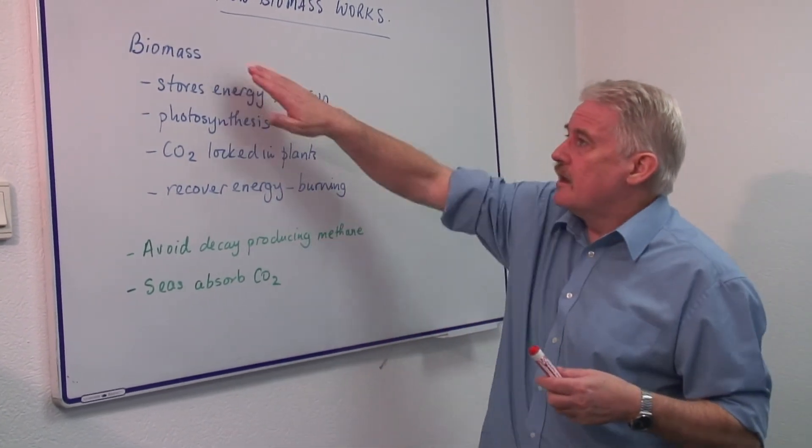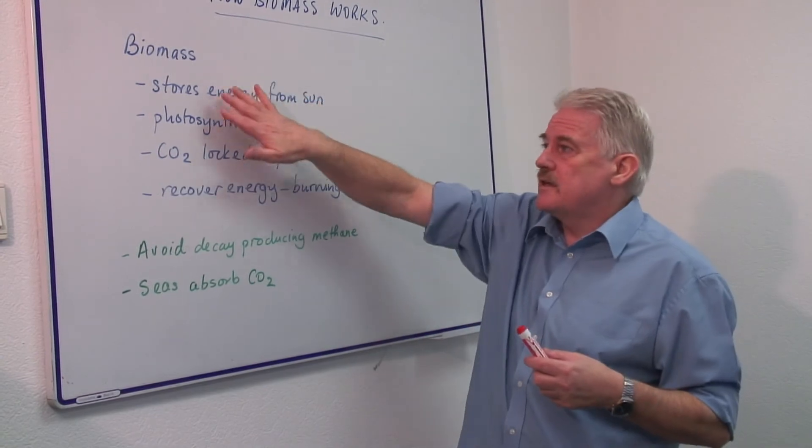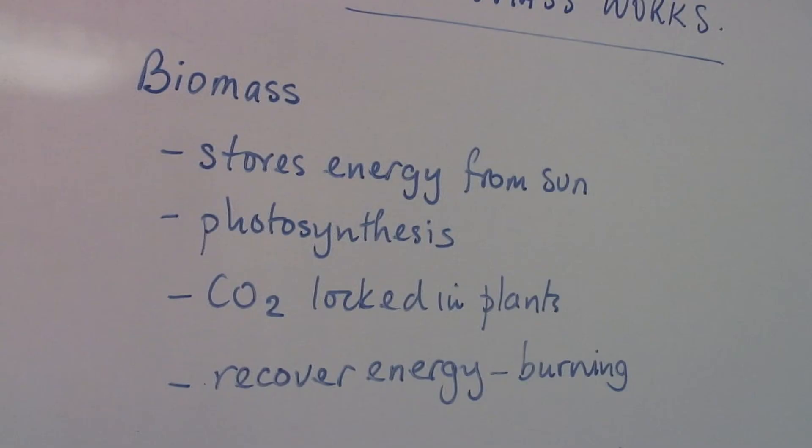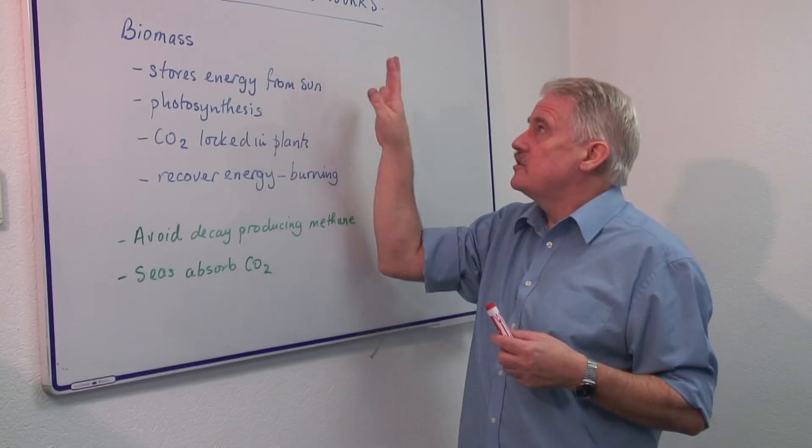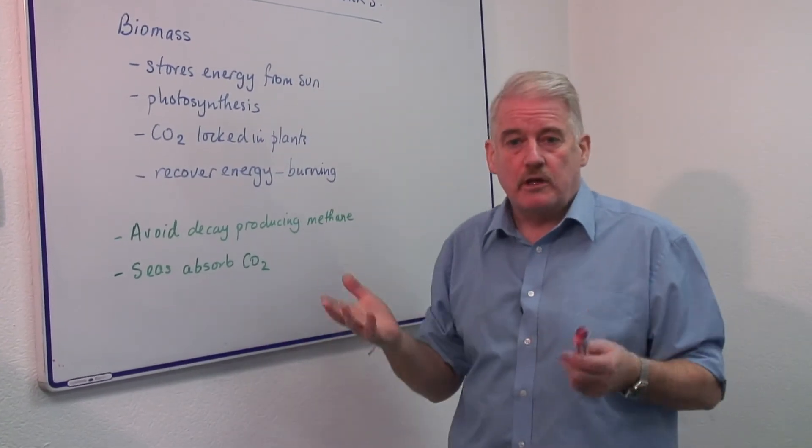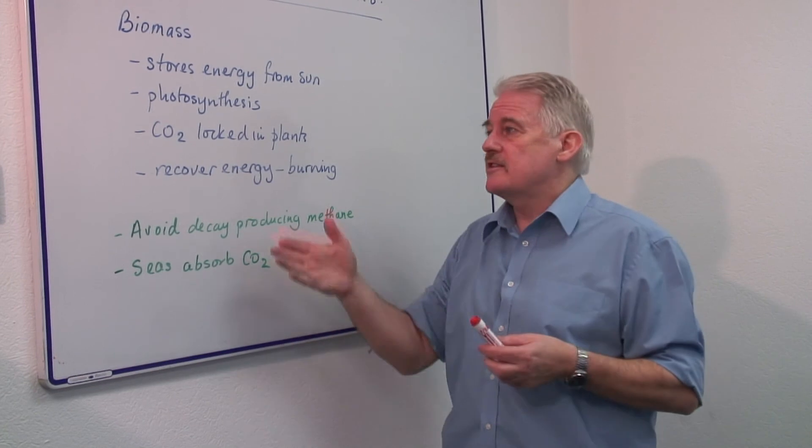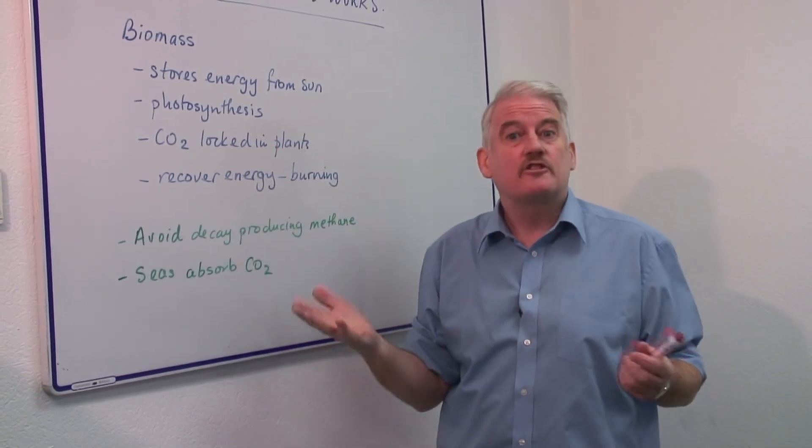So basically, biomass is the material which stores carbon dioxide through photosynthesis, locks up the energy from the sun so that we can use it, but also prevents carbon dioxide making the planet too warm.